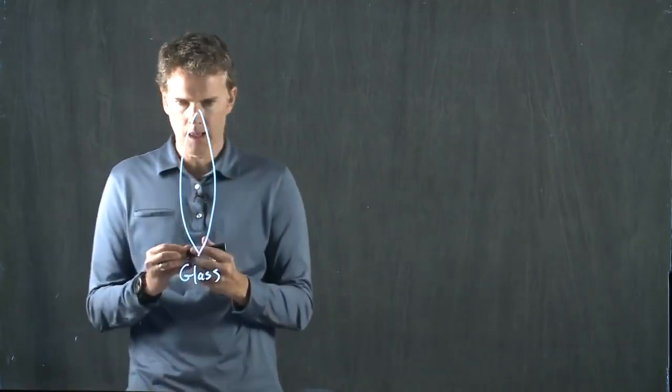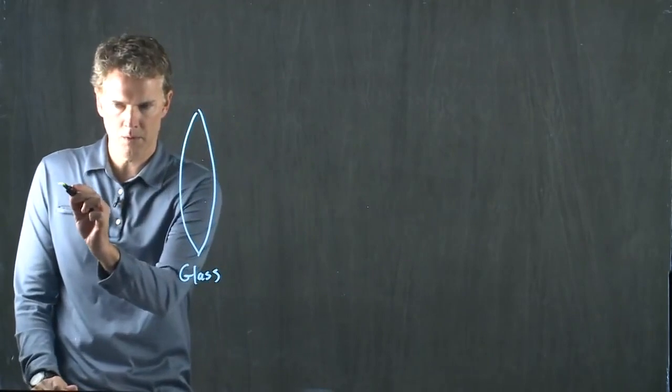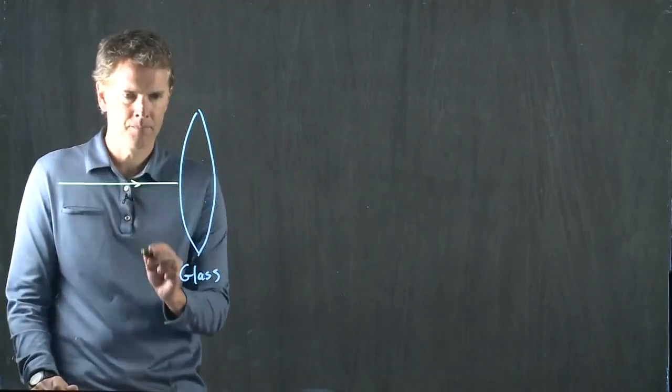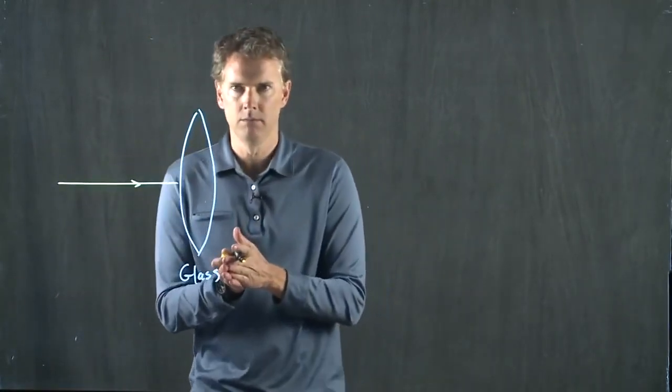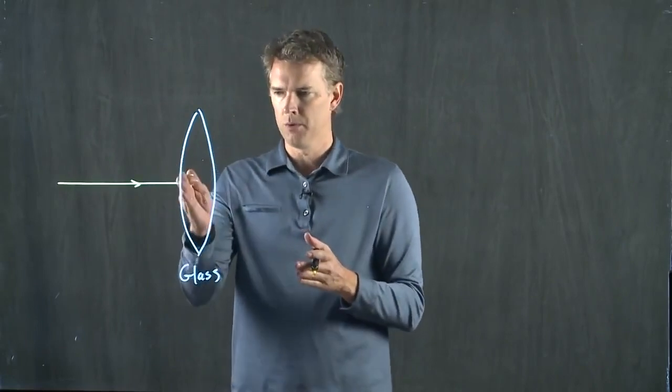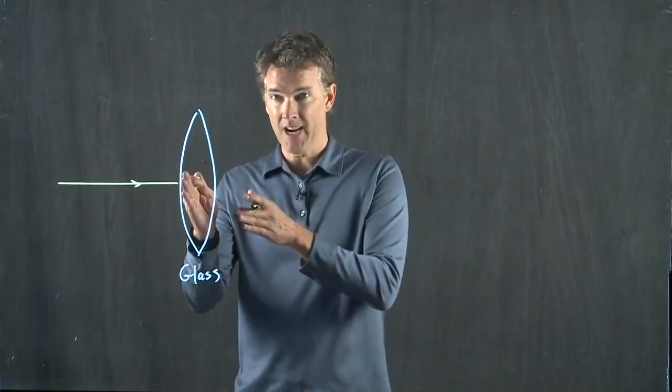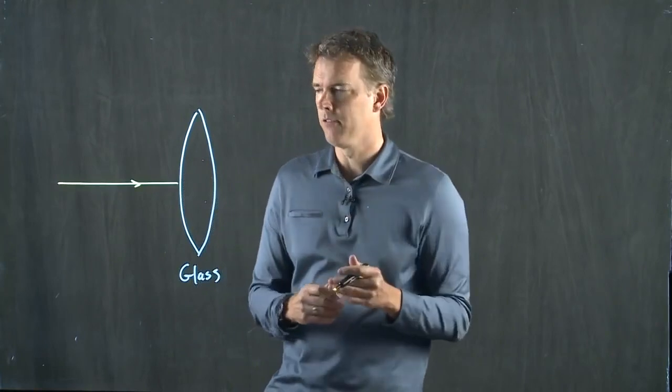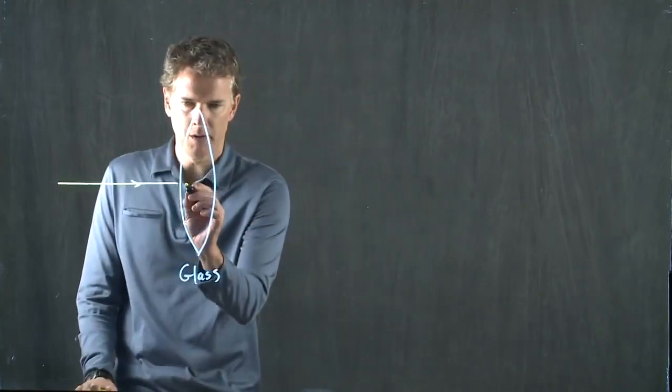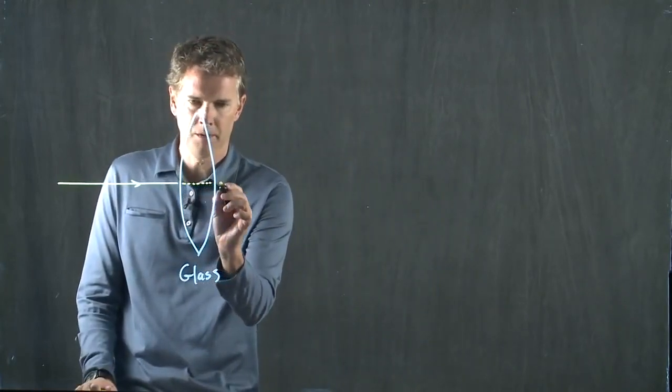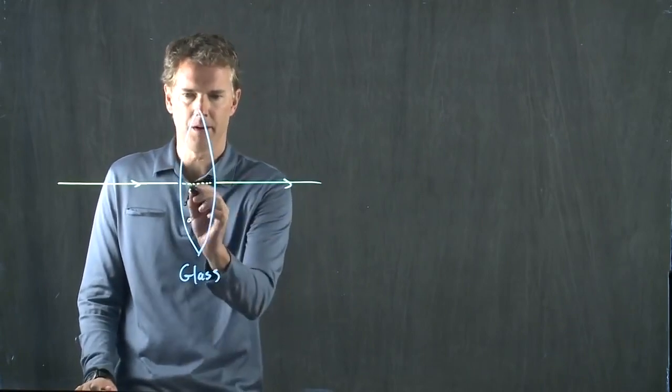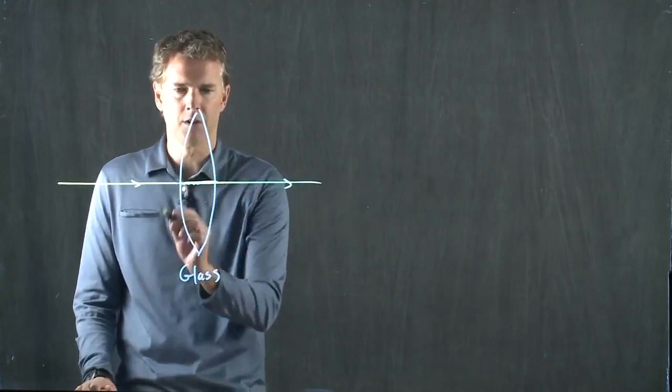We know that a light ray that is normal to the surface doesn't bend at all. If it's normal to the surface, theta i is zero, theta t is therefore zero. So it will continue straight on through and head off in that direction.